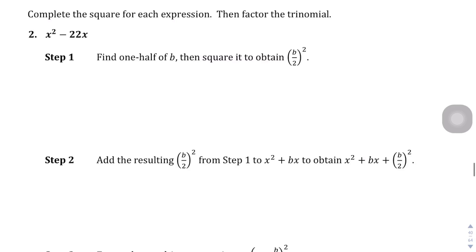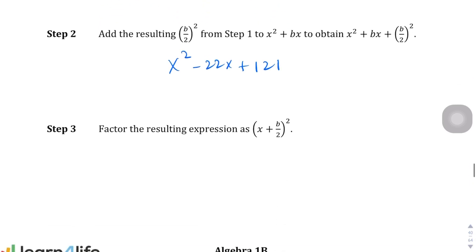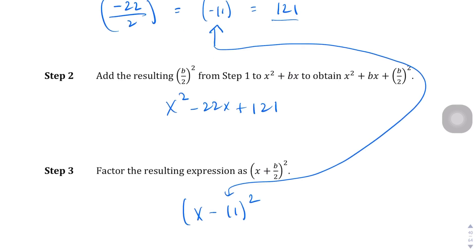Let's try that again for question number 2. The B term is negative 22. We're going to divide that by 2 and then square it. Negative 22 divided by 2 is negative 11, and negative 11 squared is 121. We tack that 121 onto the end of the equation, giving us x squared minus 22x plus 121. Using the box method, we end up with x minus 11 squared. That negative 11 fits right in, and if you multiply it out, you'll confirm it equals the original.